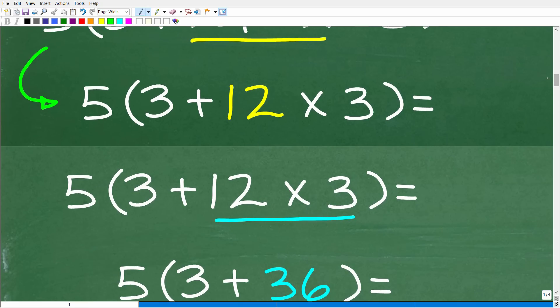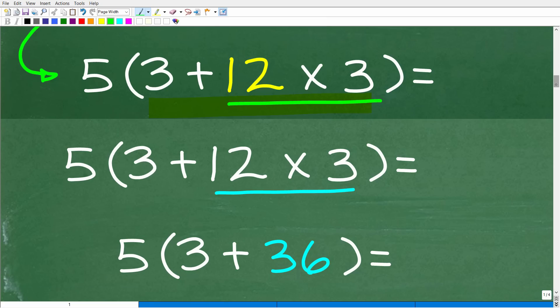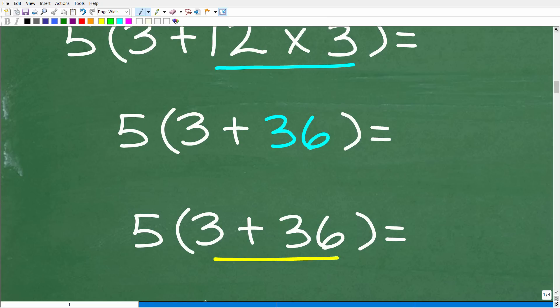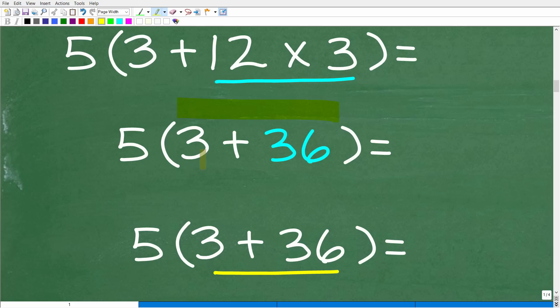All right, so here we're still inside of the parentheses. We're not done with the parentheses part of PEMDAS. But when we look inside of the parentheses, we have addition and multiplication. Well, multiplication is always going to come first before addition. So we need to do the multiplication, which of course is 12 times 3. 12 times 3 is 36. Okay, so we are making nice progress here. And now we are almost done inside of the parentheses. So 3 plus 36, we have to finish up this addition. So 3 plus 36 is what? Well, that is going to be 39.